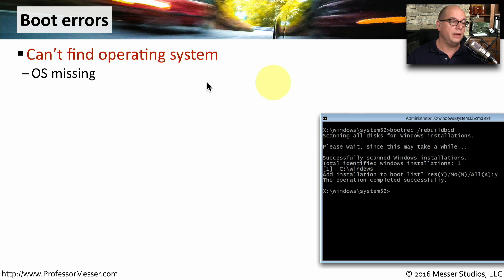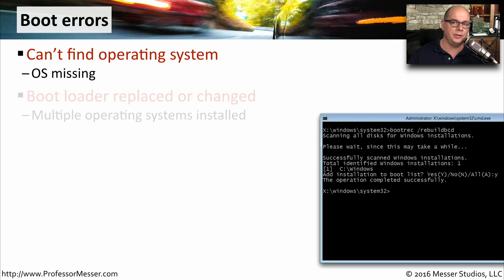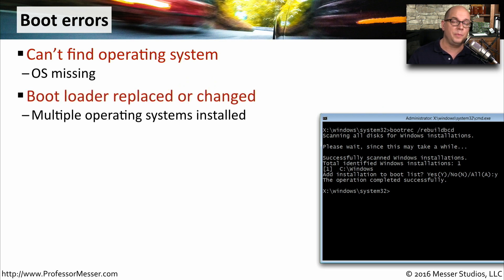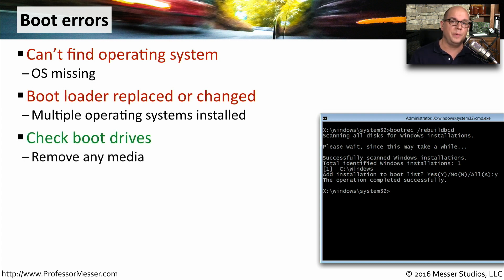If you start your computer and get a message saying the operating system can't be found or is missing, then you have a bigger problem. This could occur because you've installed an additional operating system and overwritten the original bootloader, so no bootloader is installed and no operating system can be found. It might also occur because you've left some media in a boot drive, so make sure you don't have any optical media or USB storage device connected, and try rebooting again.